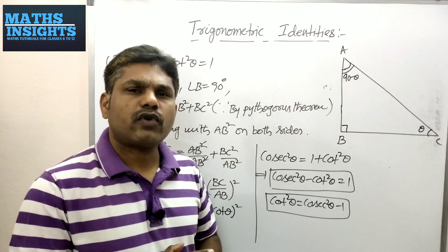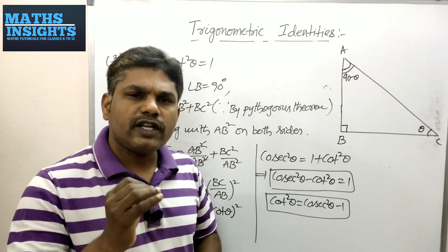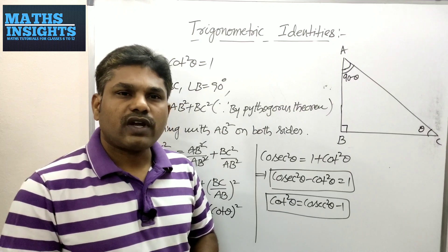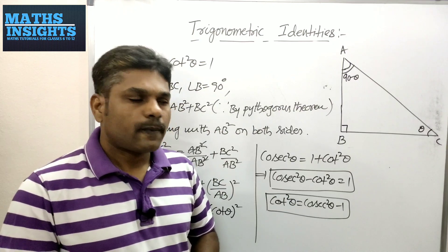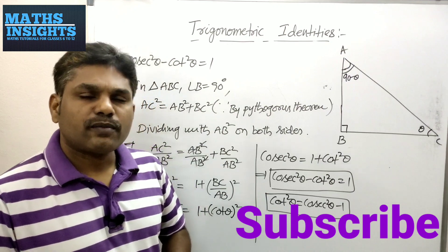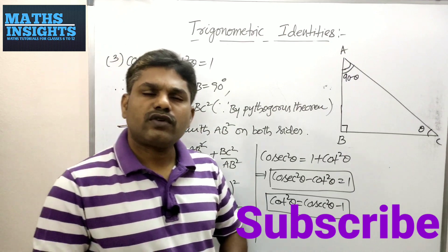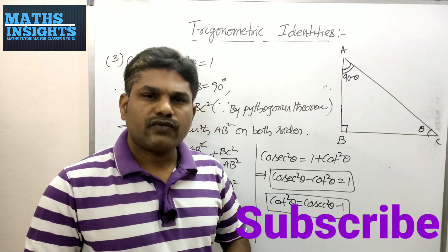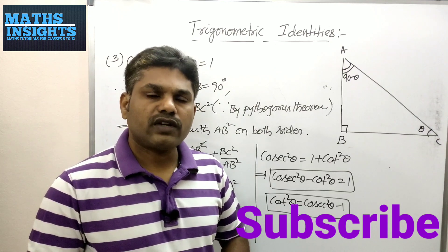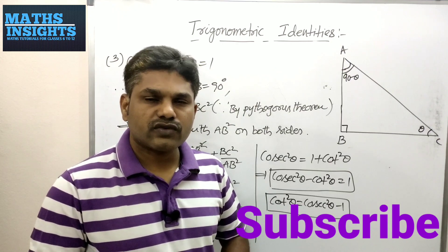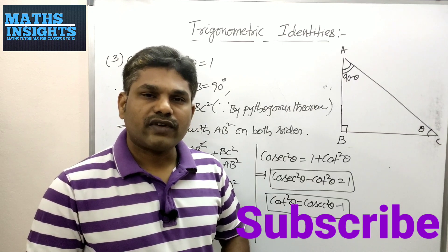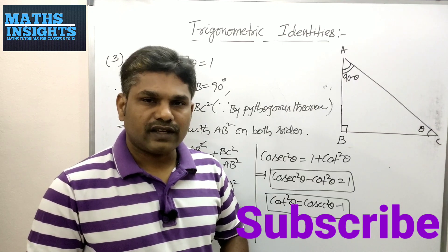So these are the three trigonometric identities, and I am saying that these are very, very important to solve any problem in trigonometry. I hope this video has given you some important information. If you like this video, don't forget to subscribe — if you subscribe and encourage me I will make more informative videos. We will meet in the next video. Until then, have a nice day. Thank you very much.